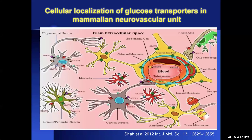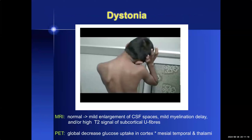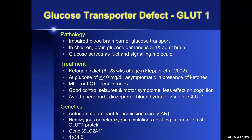This slide highlights the family of glucose transporters in the CNS — GLUT1 is expressed in granule and pyramidal neurons, astrocytes, and in the blood-brain barrier. The MRI may be normal or show mild enlargement of the CSF spaces, mild myelination delay, or high T2 signal of the subcortical U fibers. PET scanning shows a global decrease in glucose uptake in the motor cortex, mesiotemporal regions, and the thalami. The child's brain has a three- to four-fold higher requirement for glucose than the adult brain due to rapid growth and high metabolic rate.